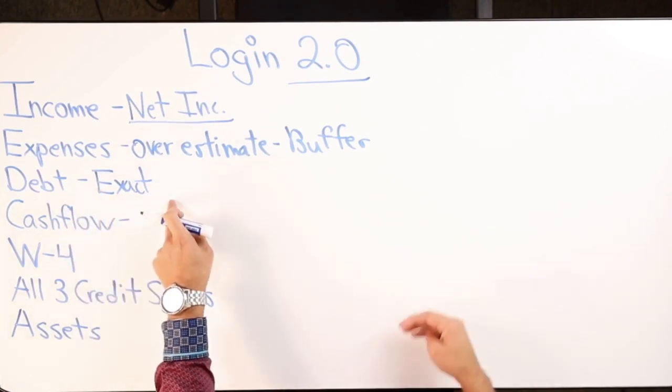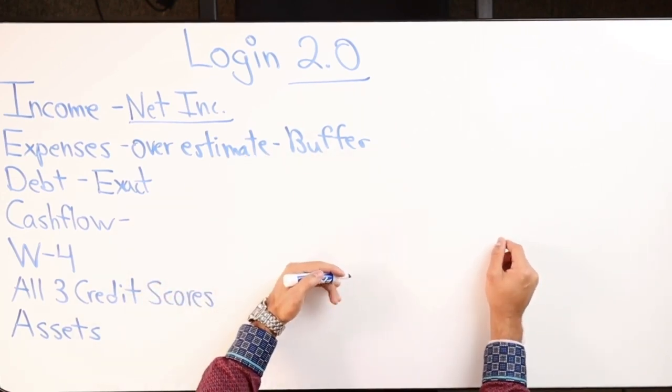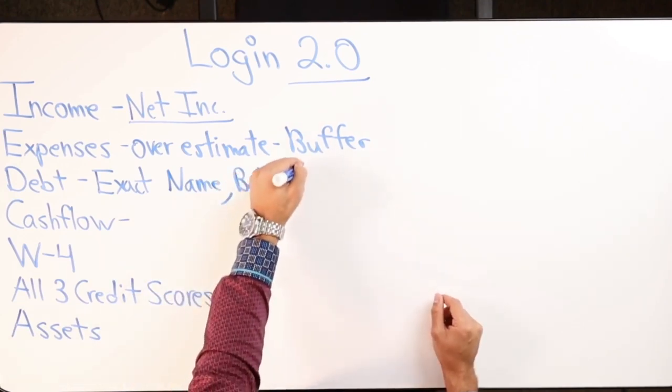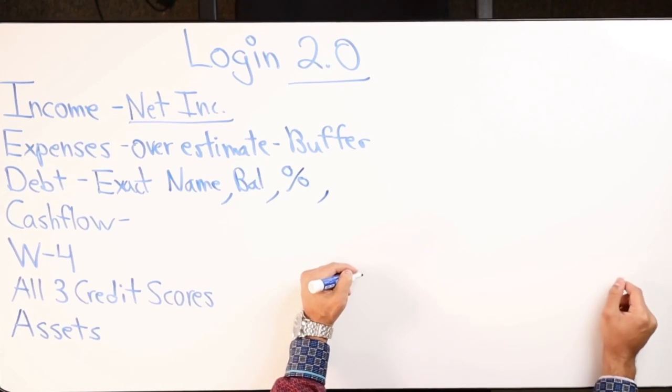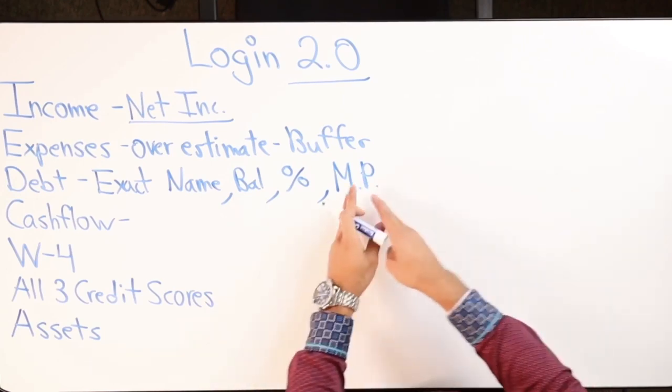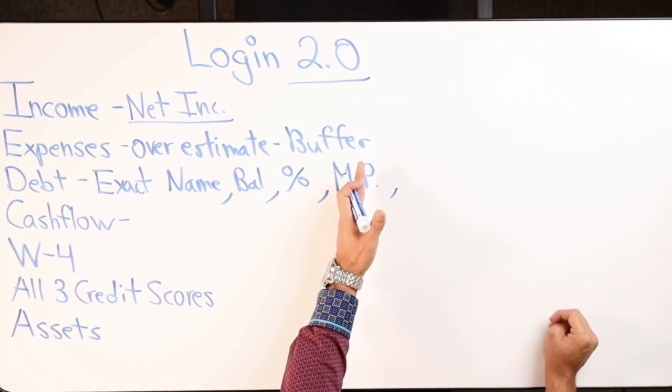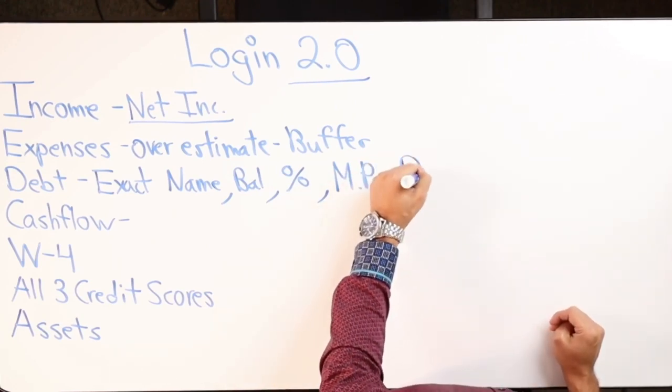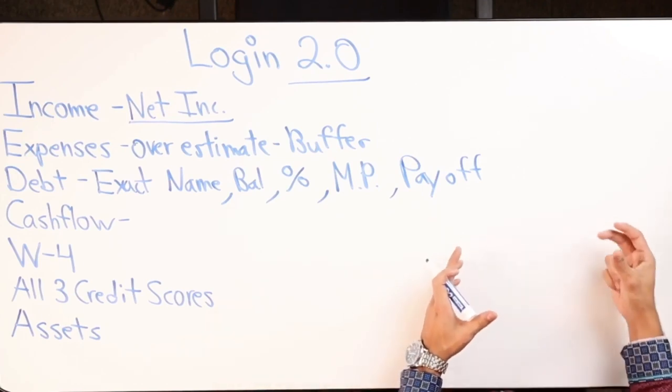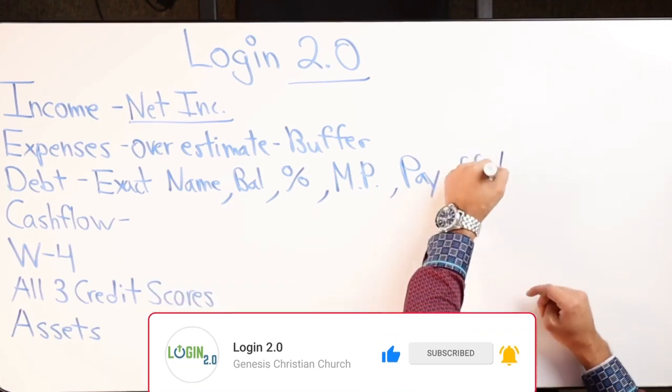So debt, exact total amount. Get that total number, but then what you're going to do is you're going to list out each debt. So you're going to name it. You're going to name each debt. We want to know what the total balance owed is. We want to know what the interest rate is on that debt, and we want to know the monthly minimum payment. Not what you're paying. Maybe you're overpaying, but we want to know what the monthly minimum payment is. So name, balance owed, interest rate, the monthly minimum payment. And then the payoff time. So you can get the schedule. So if it's a mortgage, you got a 30-year mortgage, find out what the maturity date of that loan, student loan, whatever that debt is. Let's get the payoff date.